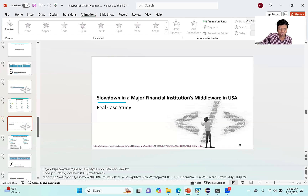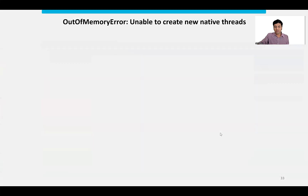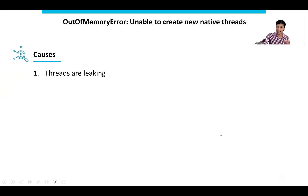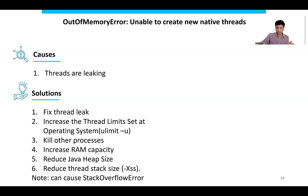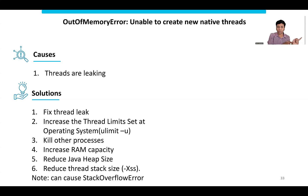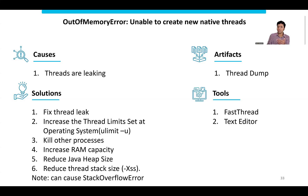When this type of out of memory error happens, the cause is a thread leak. The solution is to fix the thread leak. But sometimes this error may also happen because of a kernel limit — the kernel may allow your application only 512 or 1024 threads, and if you exceed that, the error is thrown. In that case, increase the OS limit. The artifact needed is thread dumps. Tools: Fast Thread, or you can analyze thread dumps manually in a text editor.